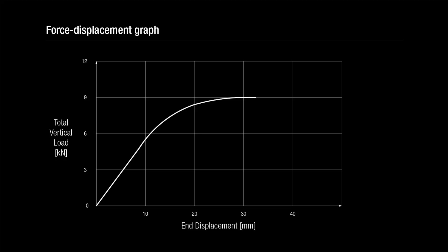The graph shows an initial linear relationship between the applied force and the vertical displacement, corresponding to the bending of the beam. However, once local buckling of the flange occurs, the slope progressively reduces until it converges onto a reduced but still positive value. This demonstrates the inherently stable post-buckling response from the observed phenomenon.